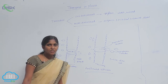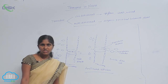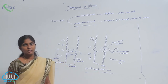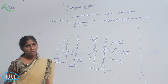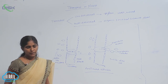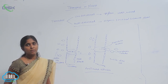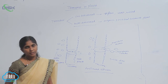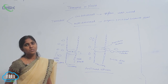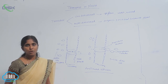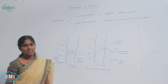Porins are proteins present on the outer membrane of plastids, mitochondria, and the cell wall of bacteria. They allow the diffusion of small-sized proteins inside the cell.